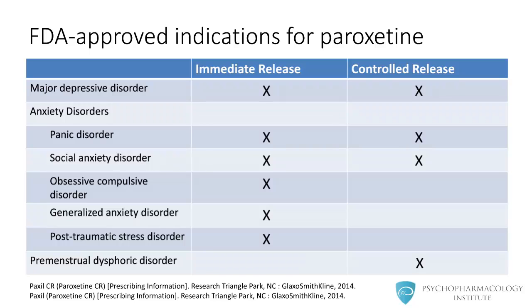Here we have a list of FDA-approved indications for the two paroxetine formulations: immediate release and controlled release. We'll explore the differences in more detail in a minute. For now, let's focus on the clinical uses. Paroxetine is approved for major depressive disorder and most anxiety disorders. Regarding anxiety disorders, the two formulations are approved for the treatment of panic disorder and social anxiety disorder.